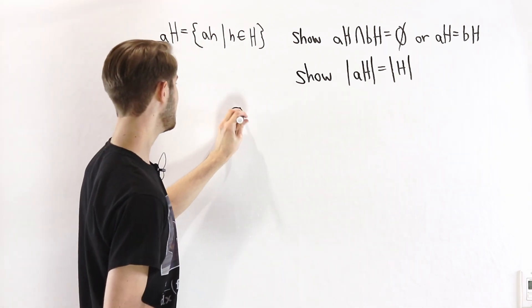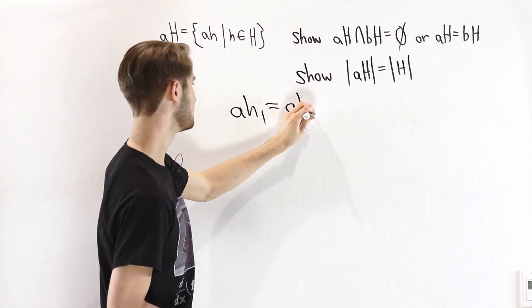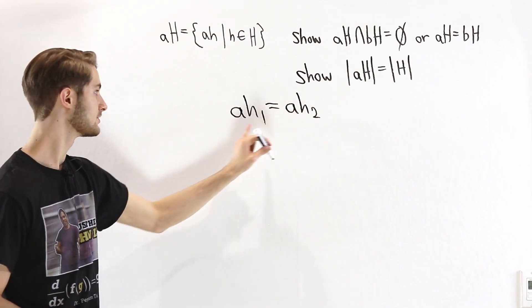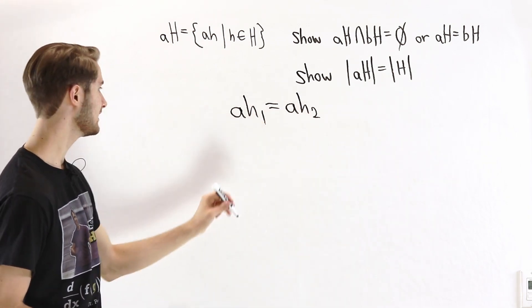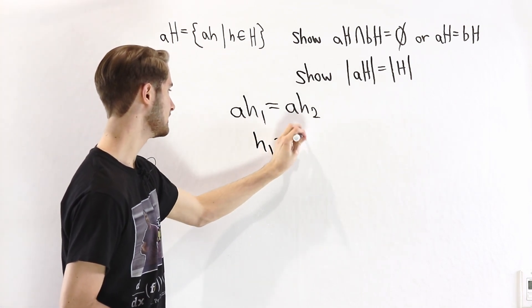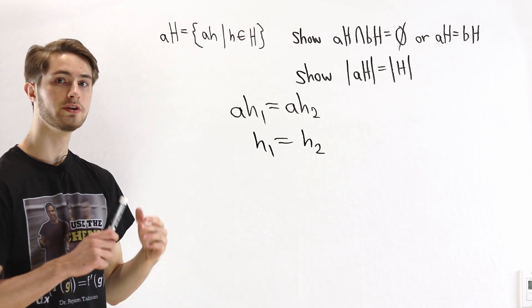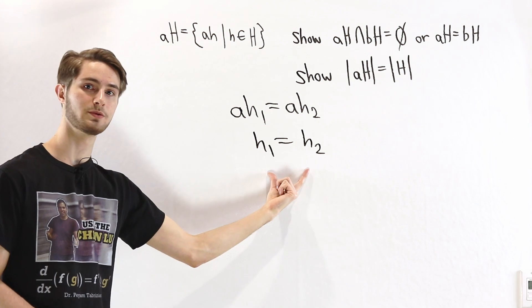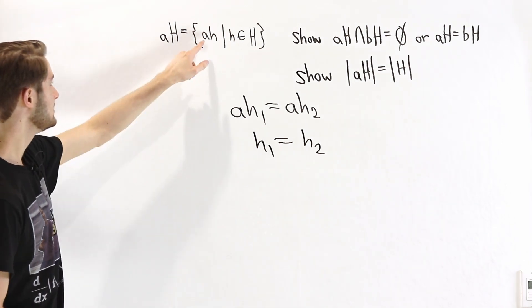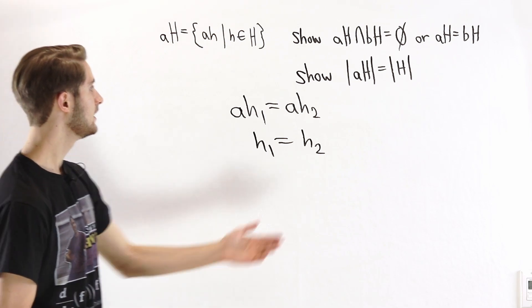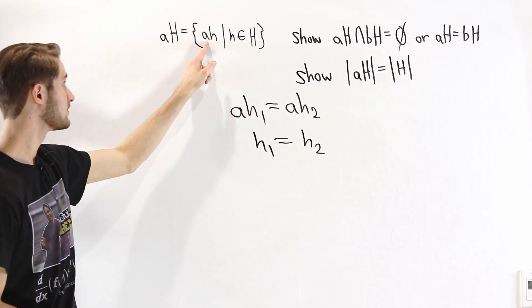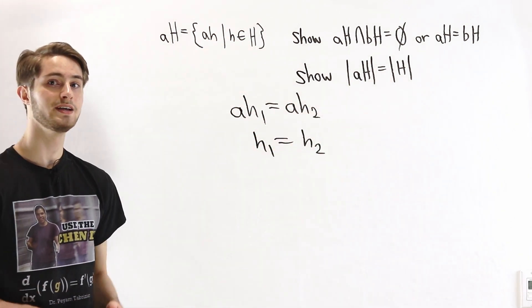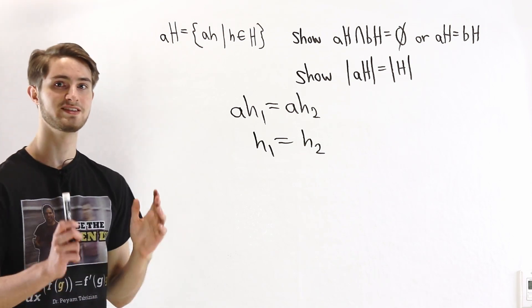Is it possible to have a times H1 equal a times H2? Well, we know that in a group every element has an inverse. So if we multiply by a inverse on the left side, we get H1 equals H2. So there aren't any repeat elements, because the only way to get the same value is if we start with the same group element. Each of these aH's is going to be unique, and therefore every single coset is going to have size equal to the number of aH's, which is the size of H. One consequence is that every single coset will have the same size.